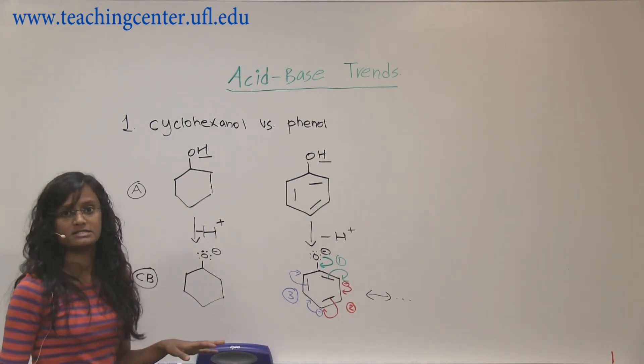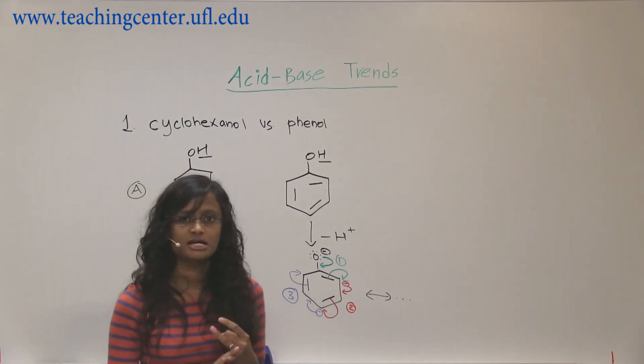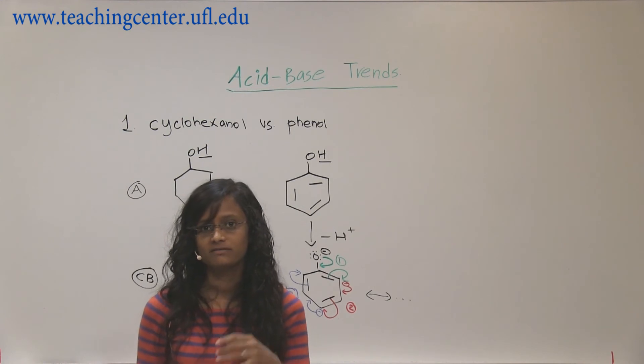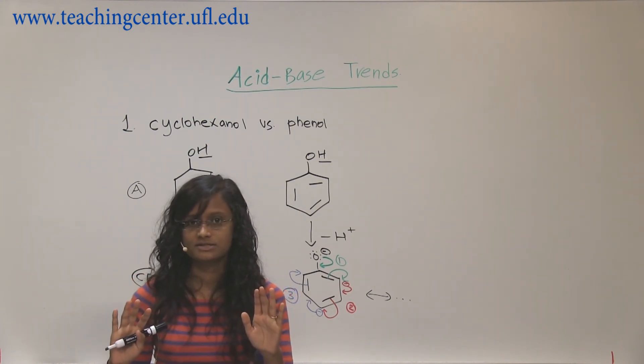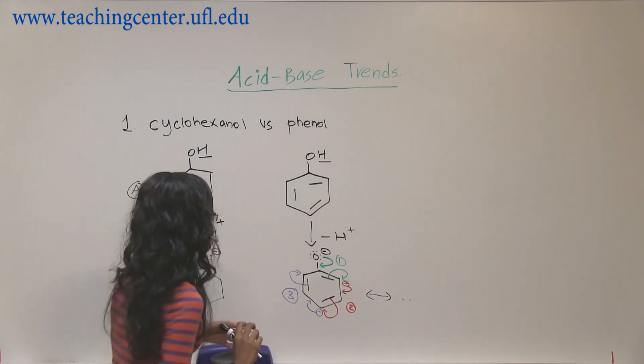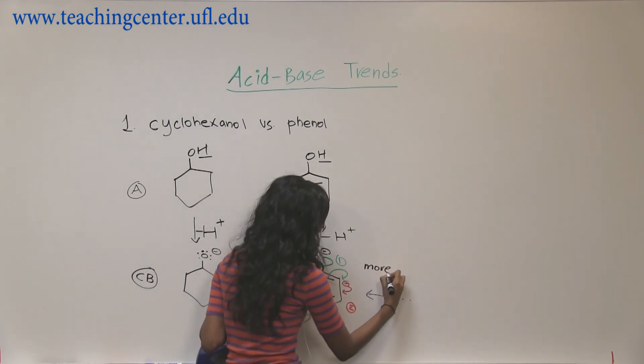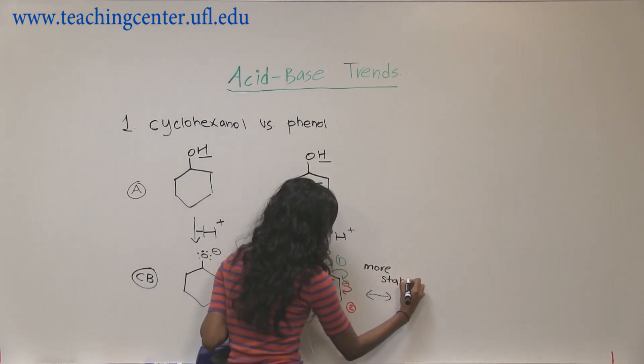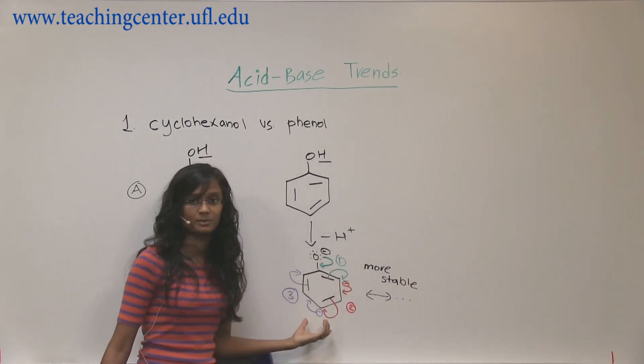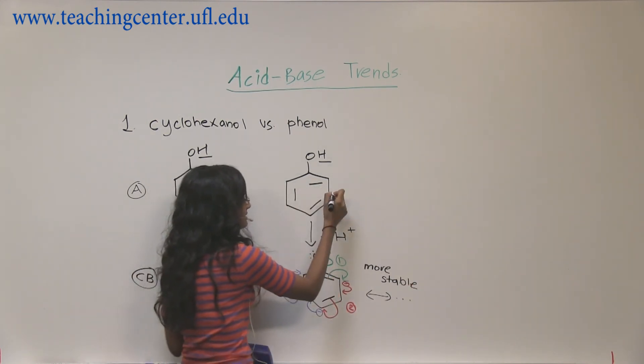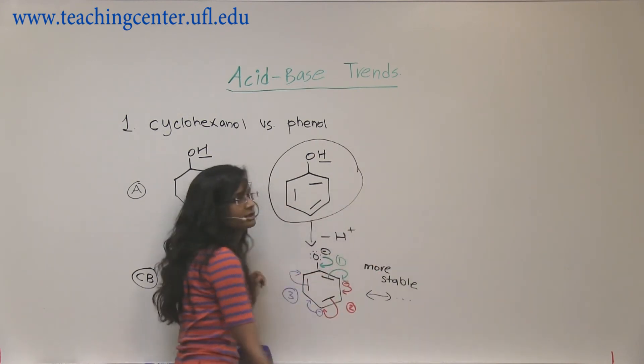Whereas here, no resonance. So, this is the first type of resonance problem, where you have resonance versus no resonance. So, resonance will win because it will make the structure more stable. So, this is more stable conjugate base. So, the acid it came from is more acidic.